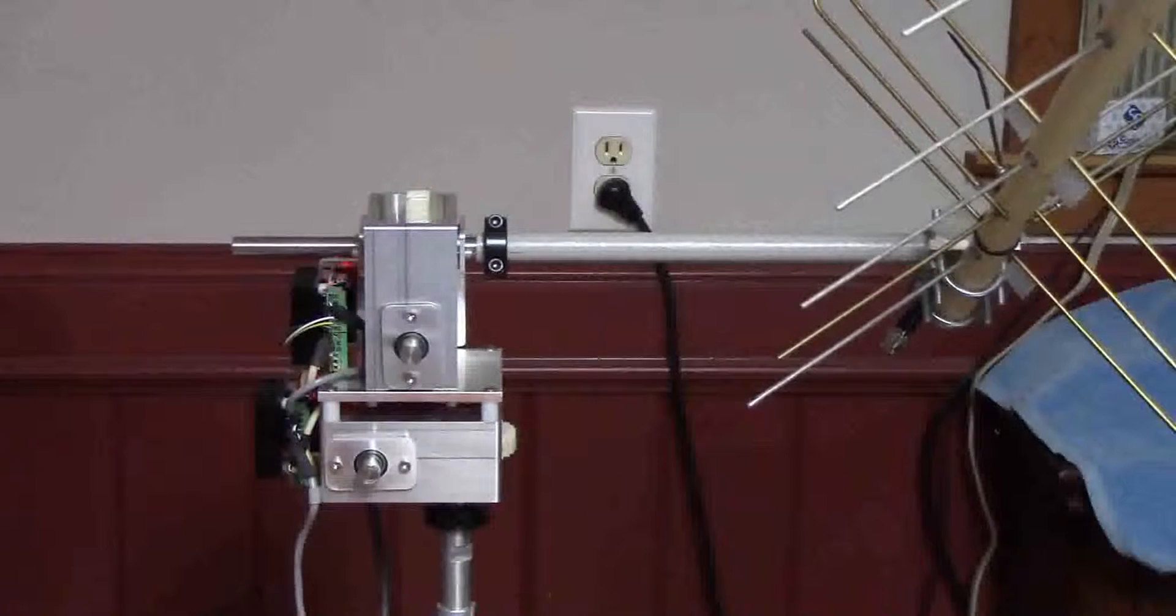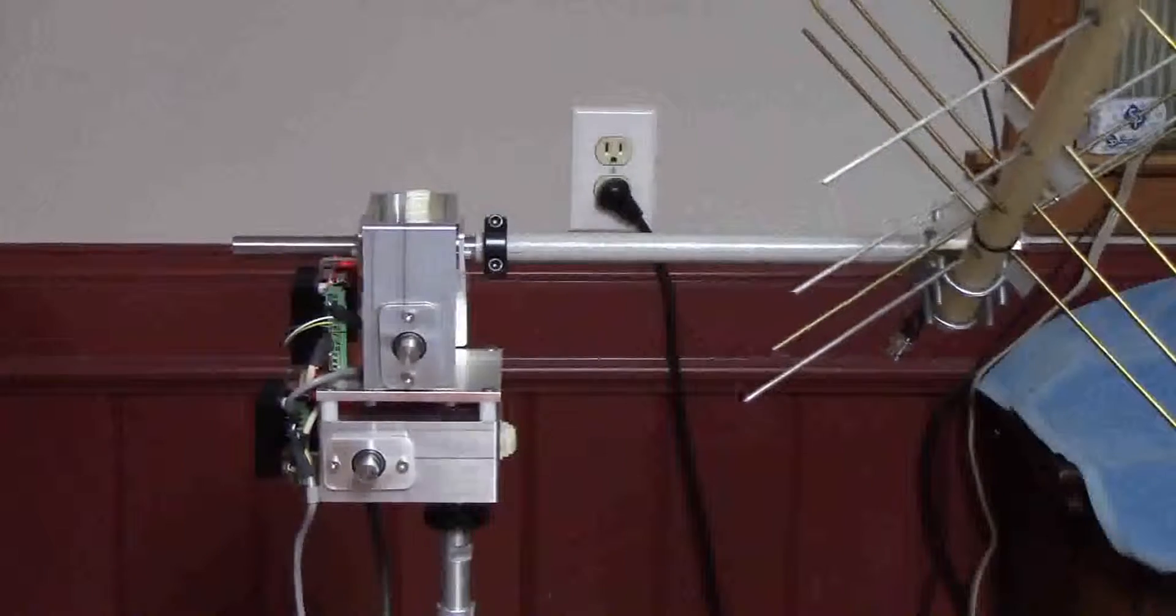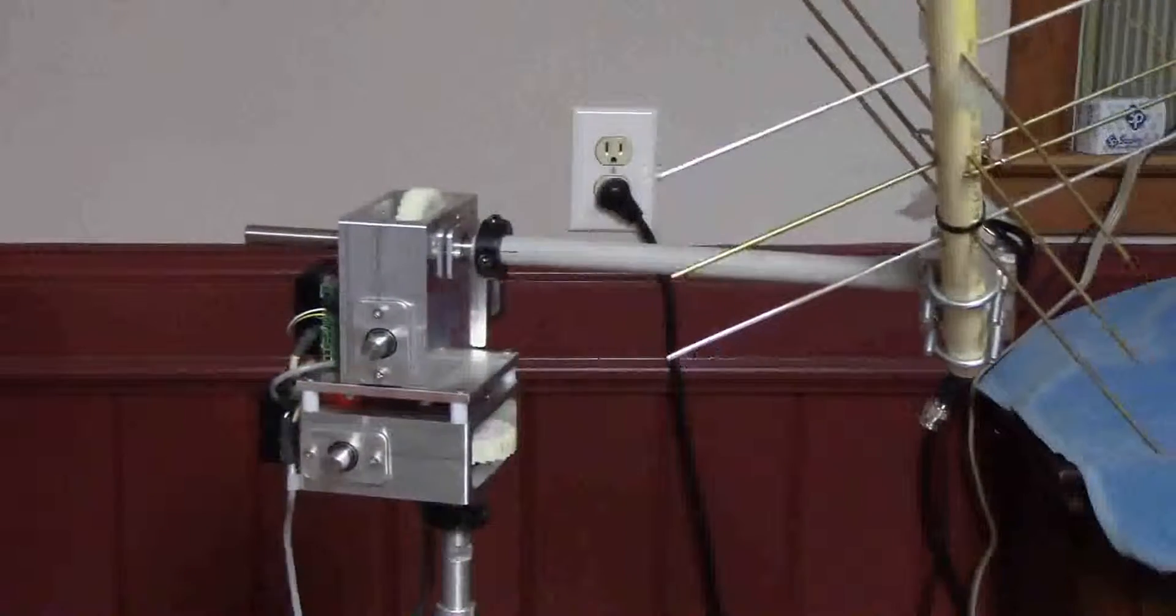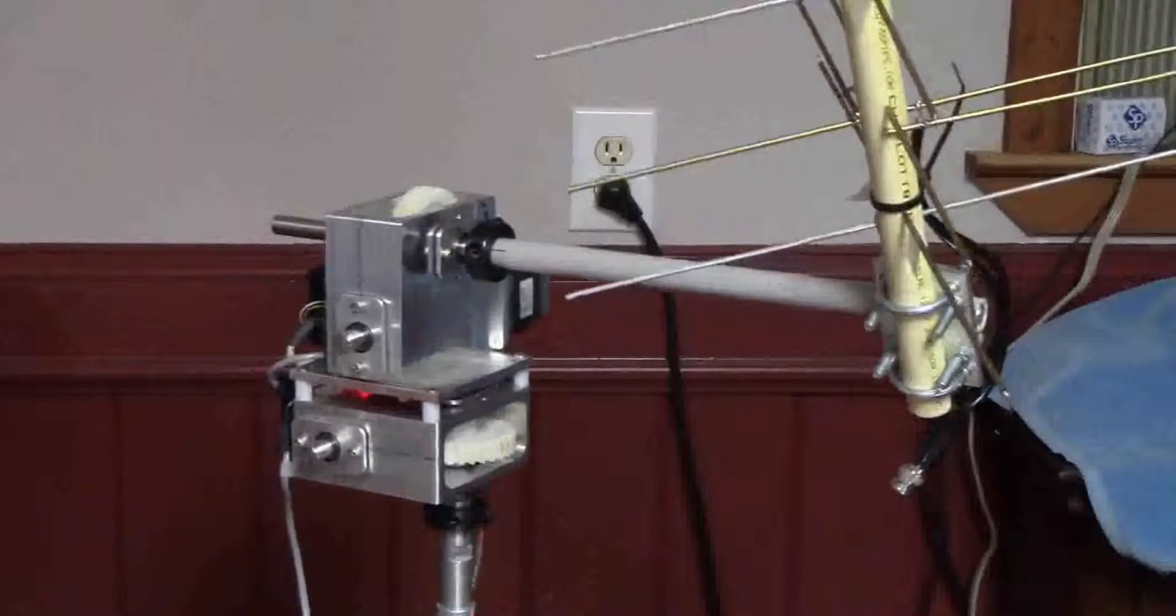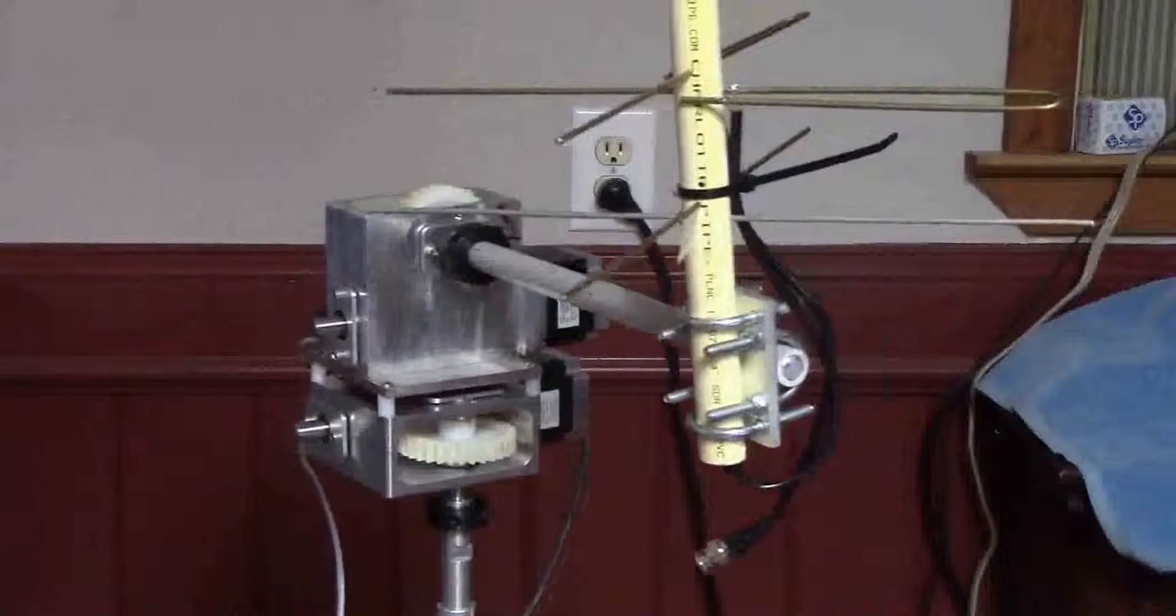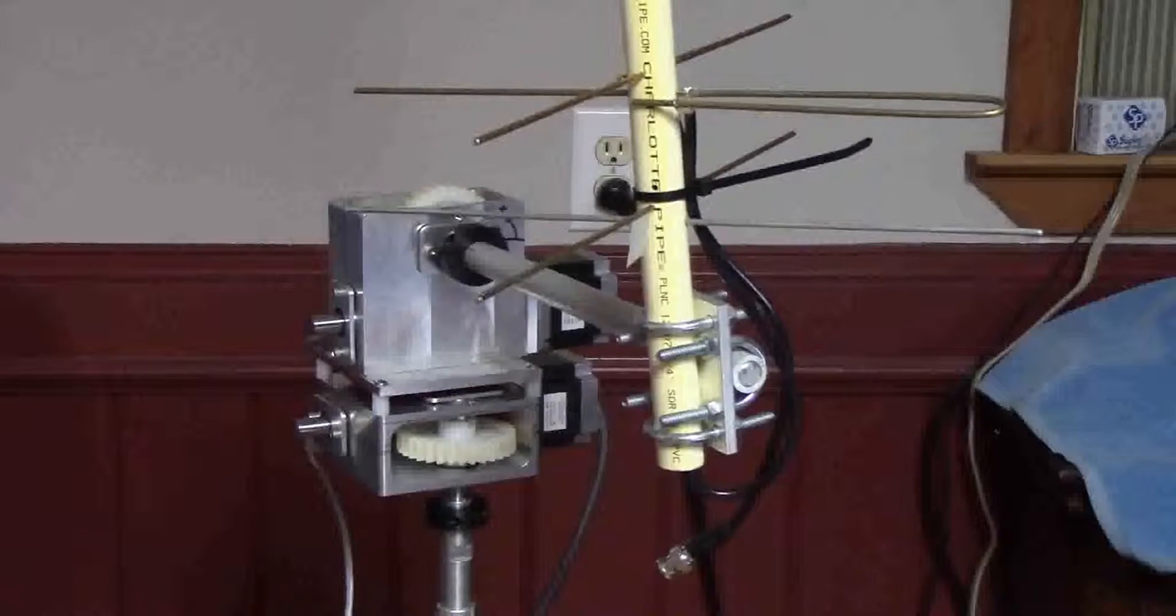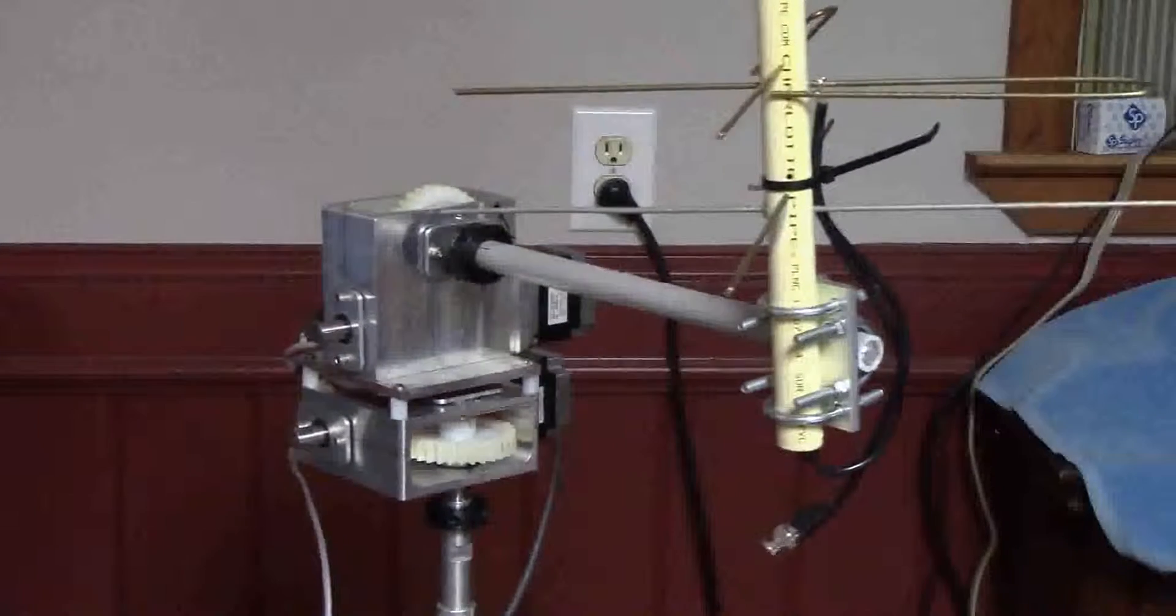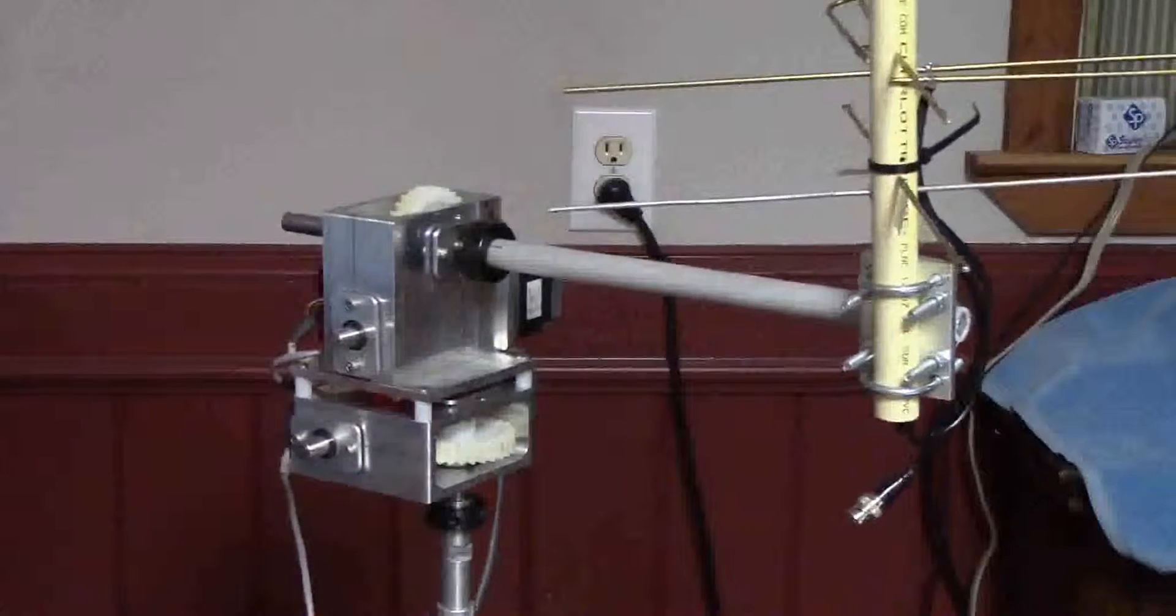Now what if we want to move azimuth and elevation? Well, we can move both of those at the same time. No problem. Full 360 degree motion in either axis.